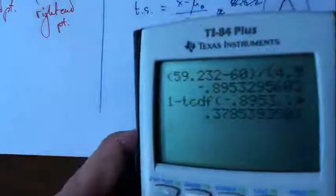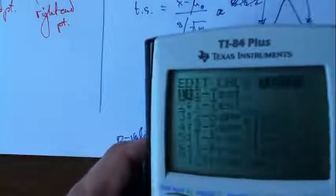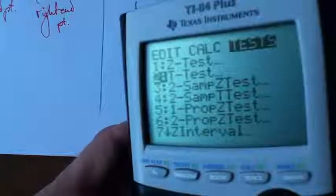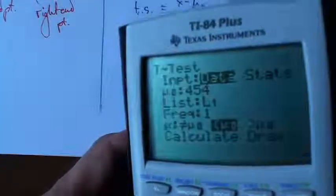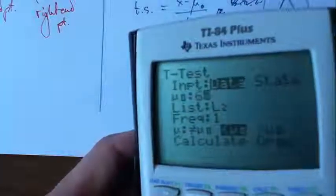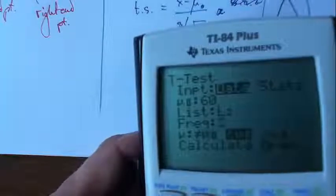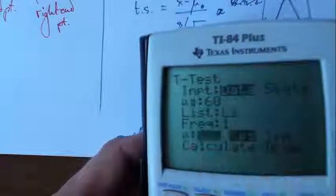All right, now again, we can do this a quick and easy way, which I certainly encourage. This is a t-test, right? And we've got our data. Our data are actually in list 2, right? And mu naught in this case is 60. And this time, though, we're doing this kind of a test, right? This is called a two-tailed test.